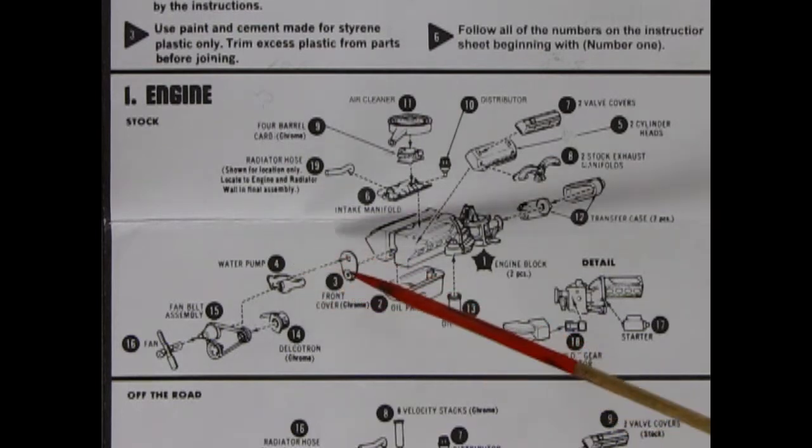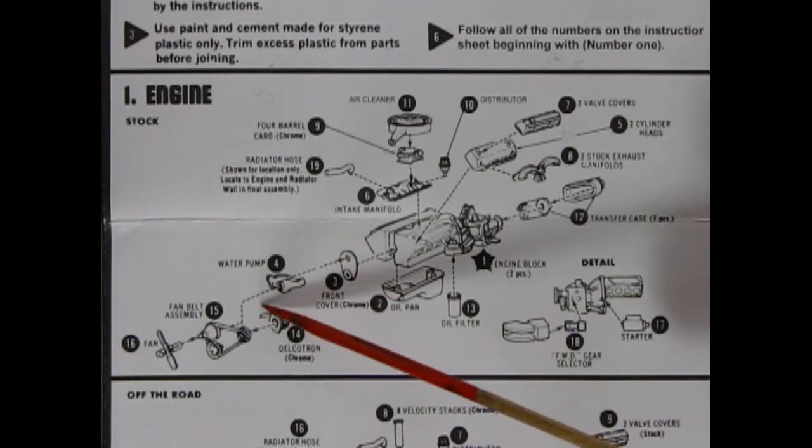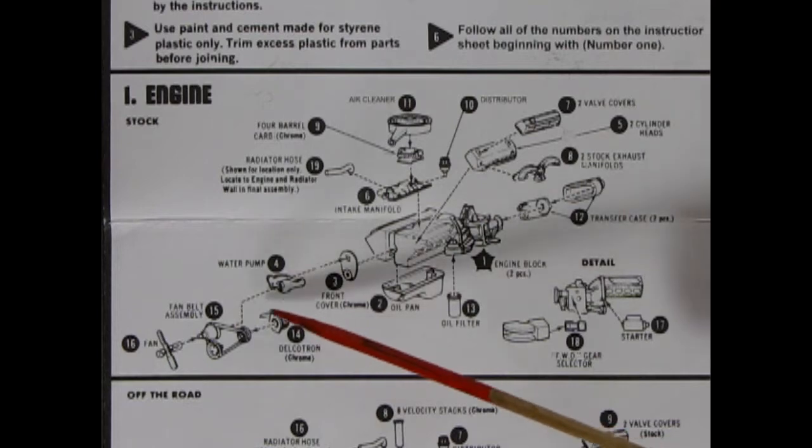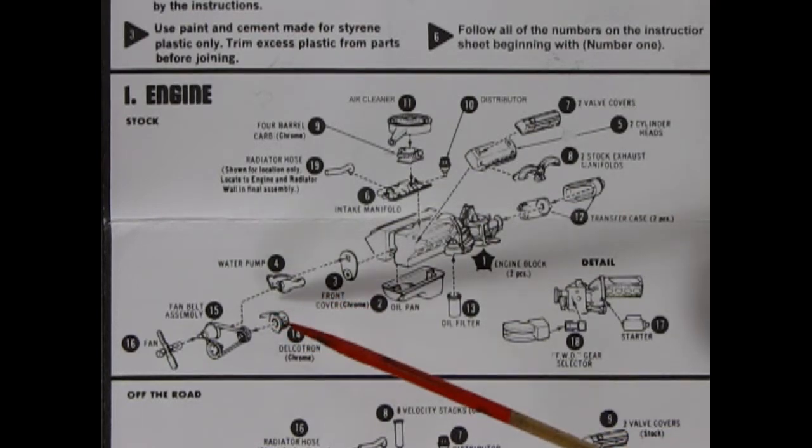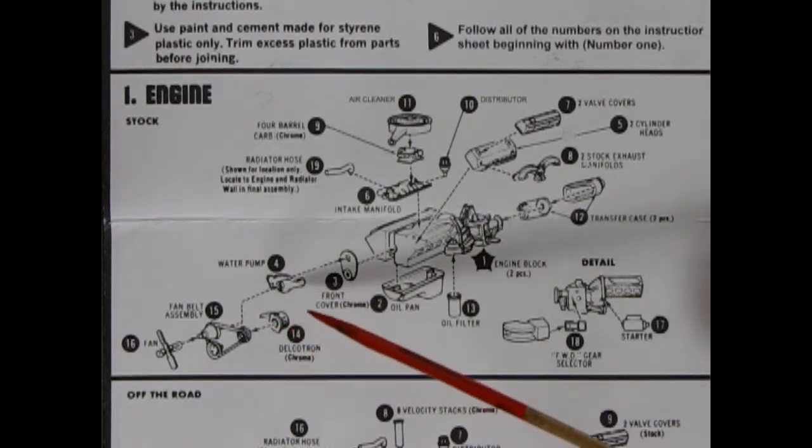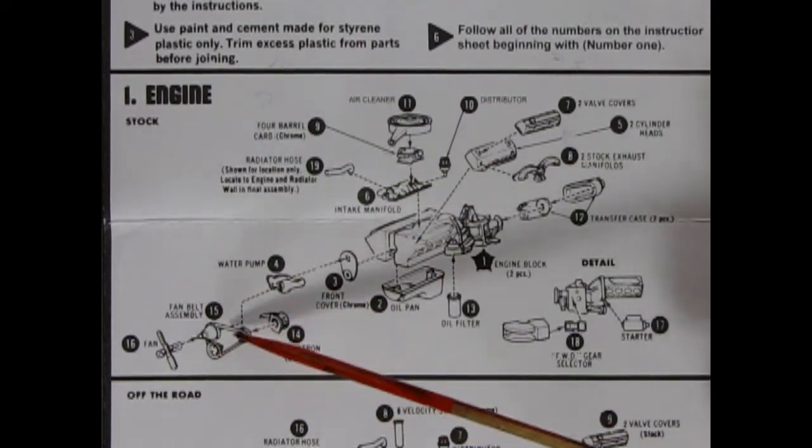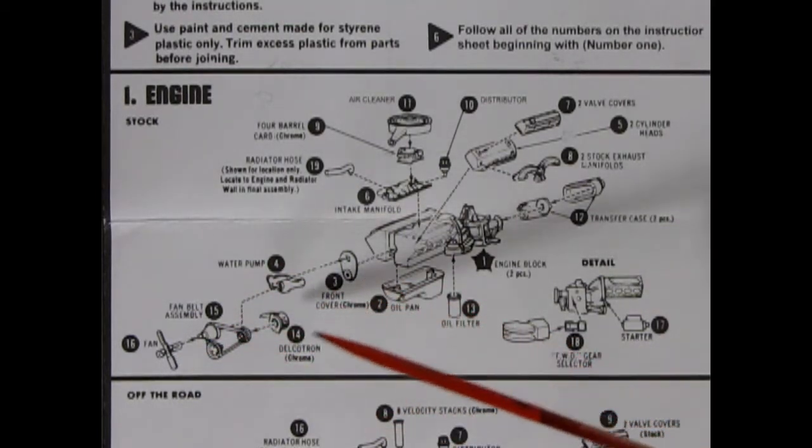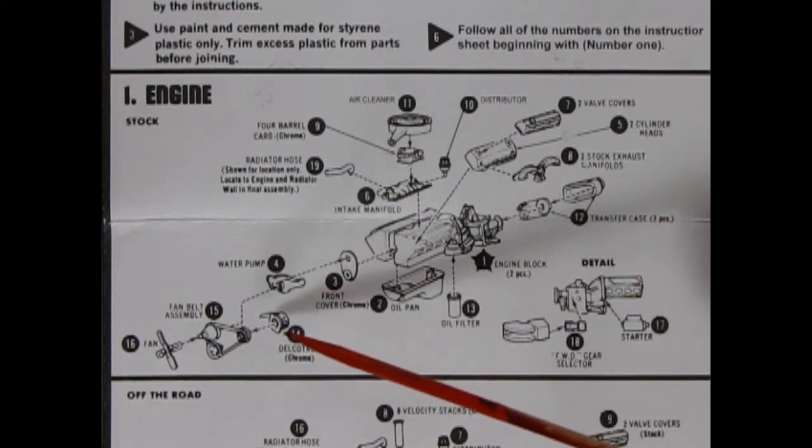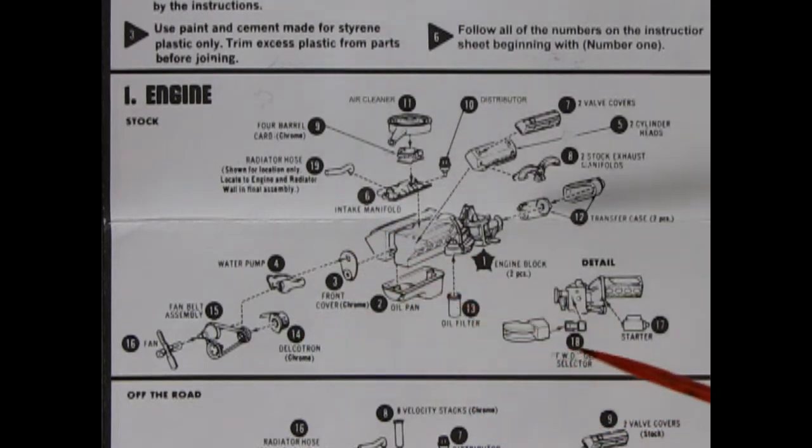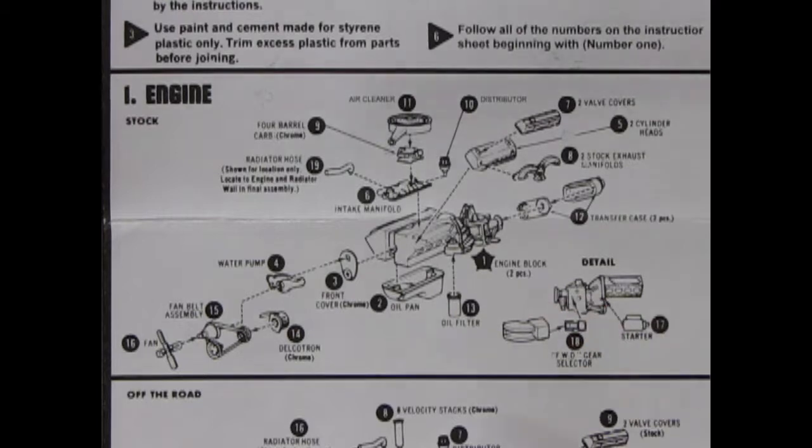We've got the top, the water pump up here, our Delcrotron. Never heard an alternator called a Delcrotron before. Anyway, there's our fan belt assembly and our fan. Maybe the Delcrotron was like a special alternator. Then we've got a two-gear selector here going off the side of the transmission and our starter motor off the side. So there's also a racing type of motor. We'll take a look at that coming up next.